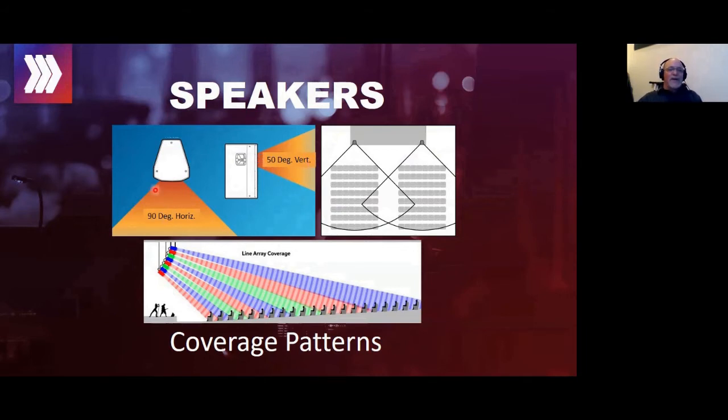Same thing with the horizontal pattern. Horizontal pattern is much wider than the vertical pattern because audiences don't sit on top of each other. They sit next to each other. If it's 90 dB SPL, when you get 45 degrees out, it's going to be 6 dB less on average, depending on the frequency.